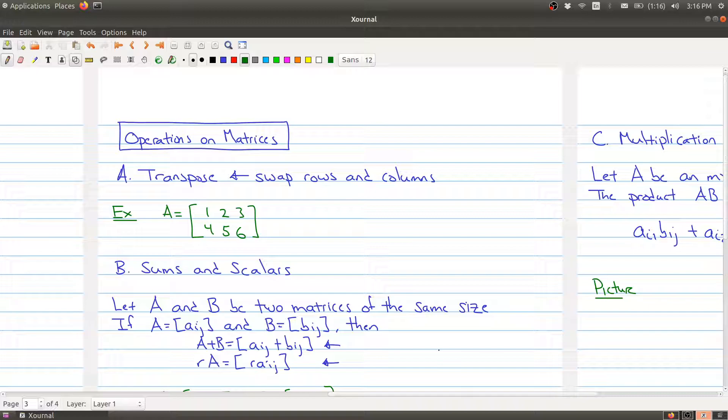Now transpose is probably the easiest of them. You simply take a matrix and swap the rows and columns. For example, if I have this two by three matrix and I want to form the transpose, the transpose is formed with superscript t. You take the first row and make it the first column, the second row becomes the second column of your matrix. That's the transpose of the matrix we started with.